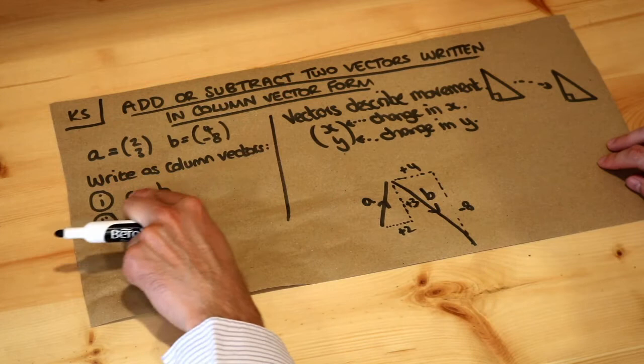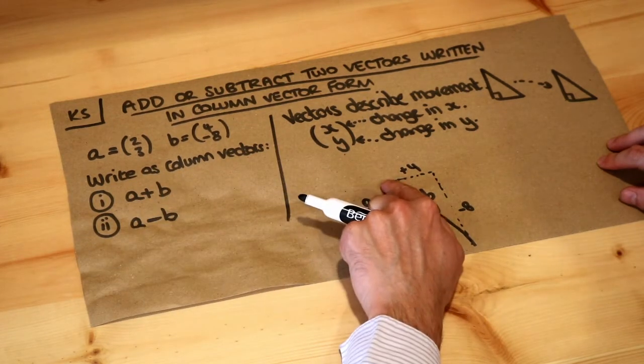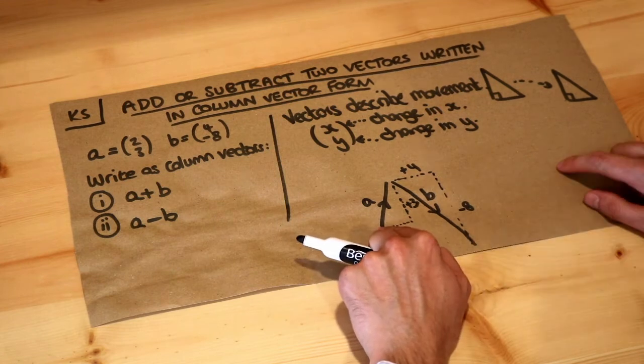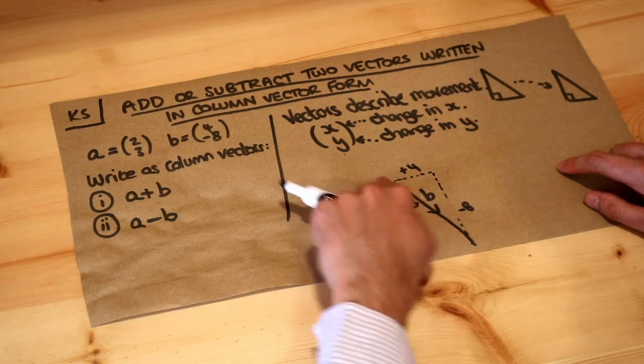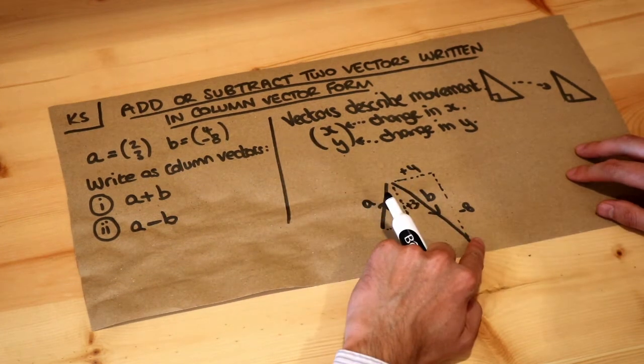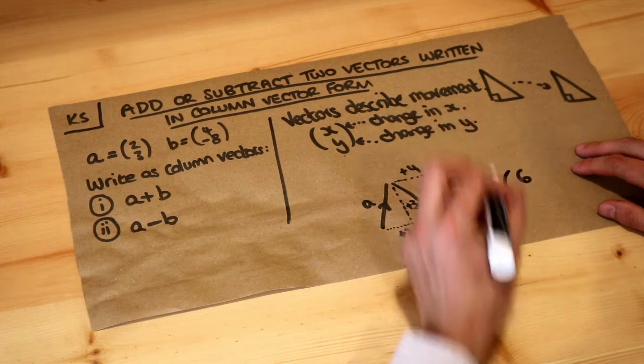Now believe it or not when you add two vectors together that represents moving by a and then moving by b. So let's think overall what would we have moved. Well if the x value is increasing by 2 to get from here to here and the x value is increasing by 4 to move from here to here, overall the x value has increased by 6.